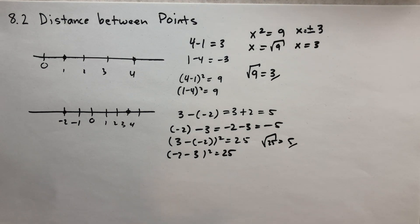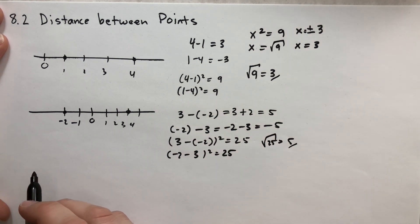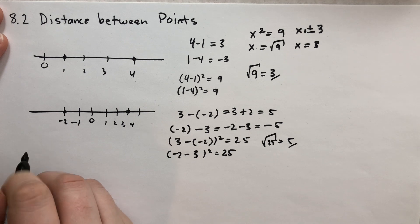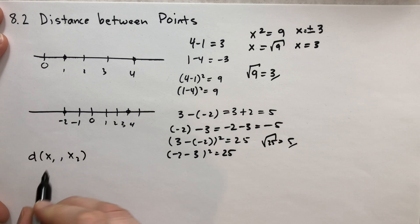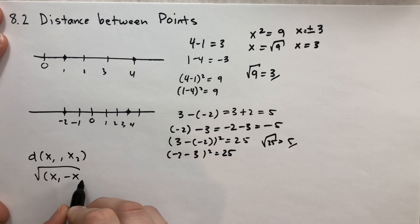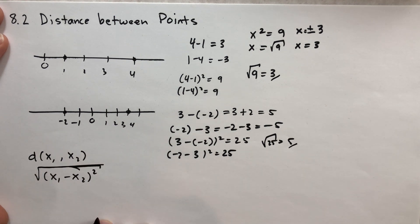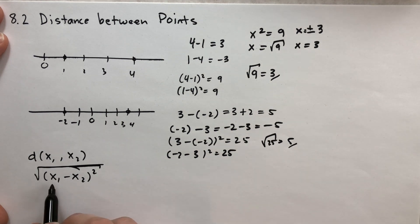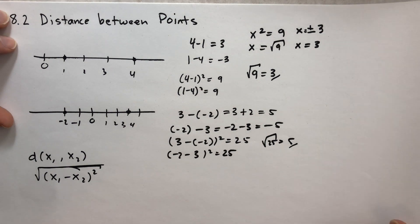So we have a formula now. This is the definition of the distance between x1 and x2 when they're on a line: the distance is the square root of (x1 minus x2) squared. It's important that you keep your minus signs straight — the minus of a minus is a positive.